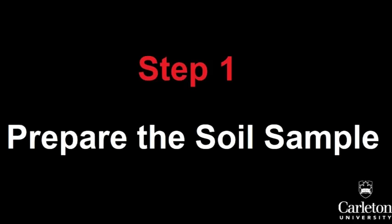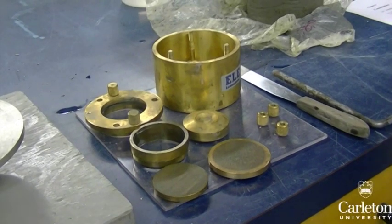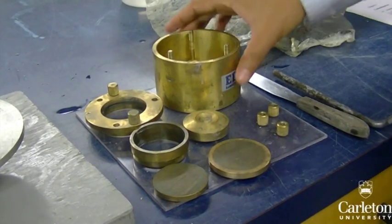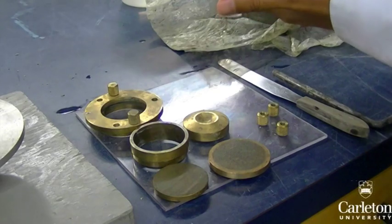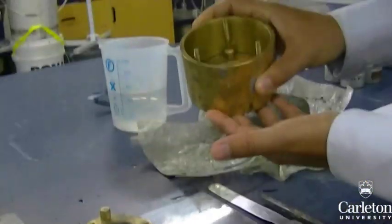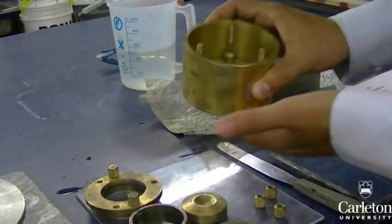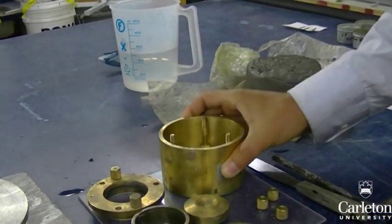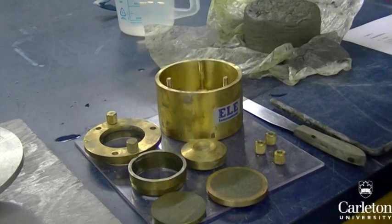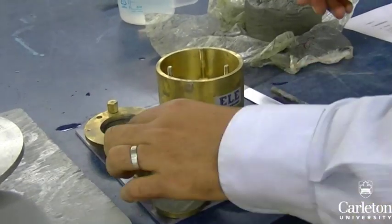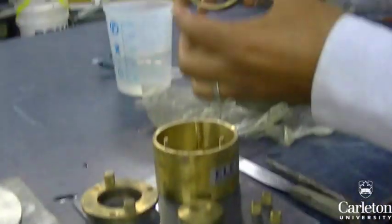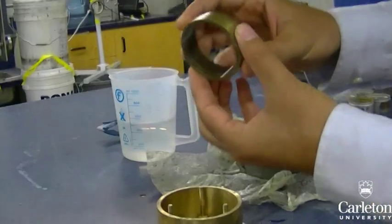Before you can begin testing, you will need to prepare the consolidation cell with the soil sample. The consolidation cell consists of several parts. This is the outer casing for the cell — this ring will surround our soil sample. It has a sharp edge on one side and a flat edge on the other.